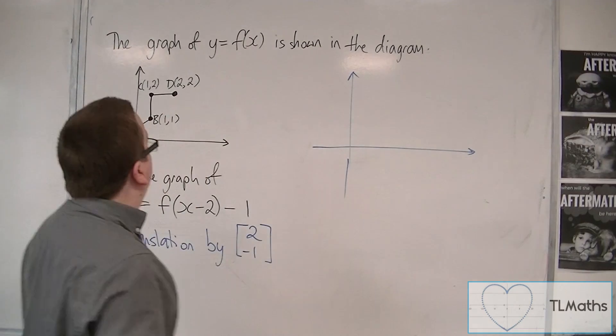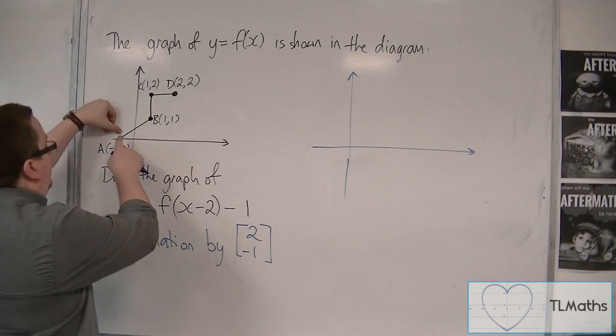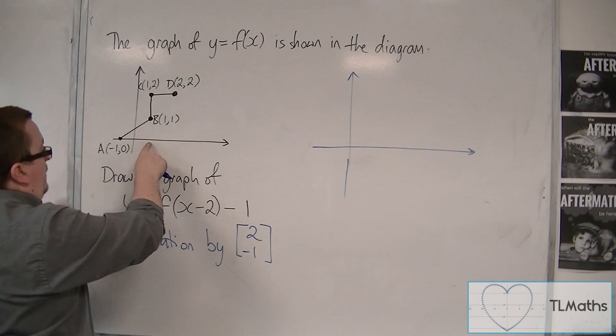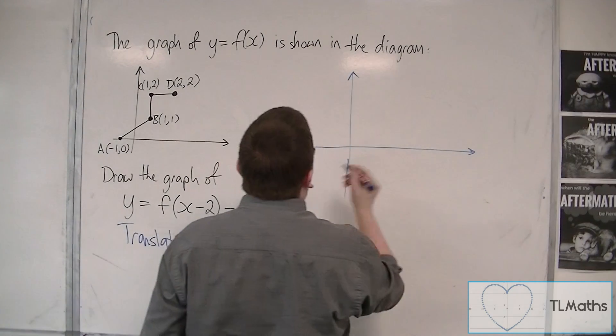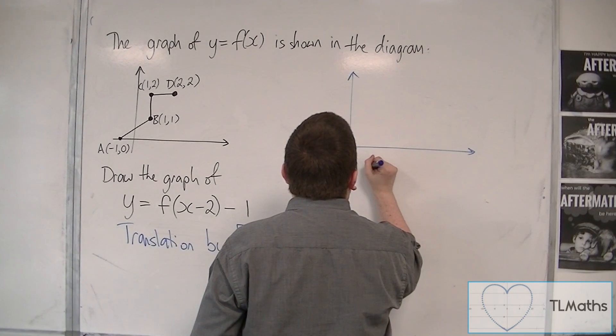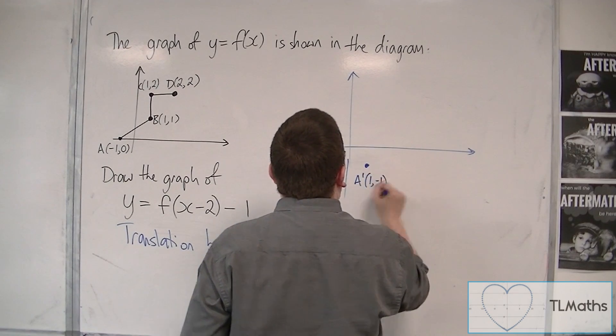OK, minus 1, 0 translates by 2, 1, so it goes along 2 to 1, 0, and then down to 1 minus 1. So that would be 1 minus 1. That's A prime, I'm going to call it.